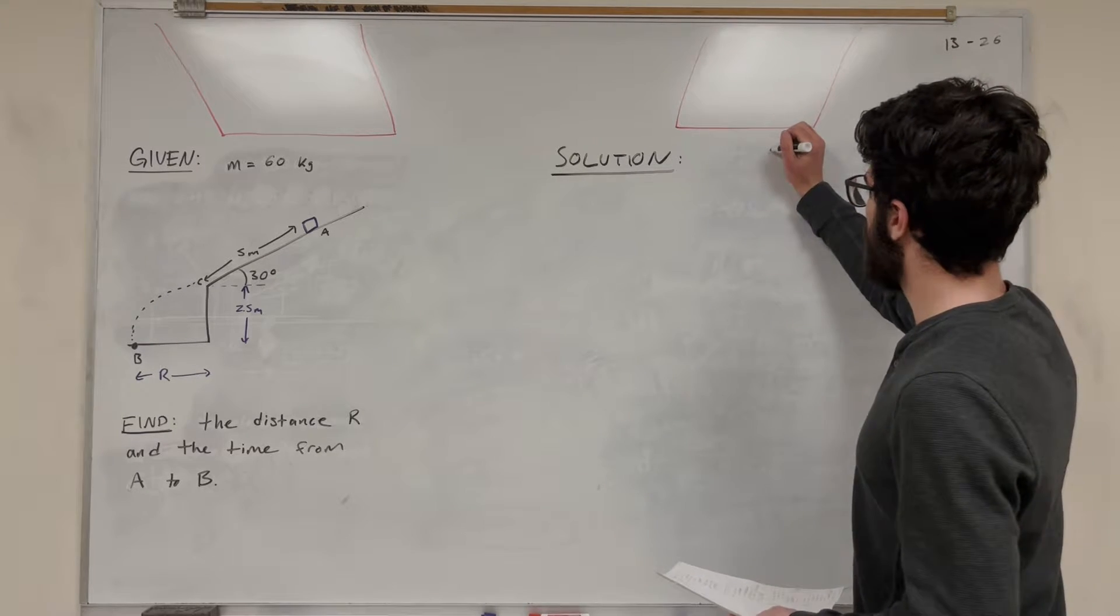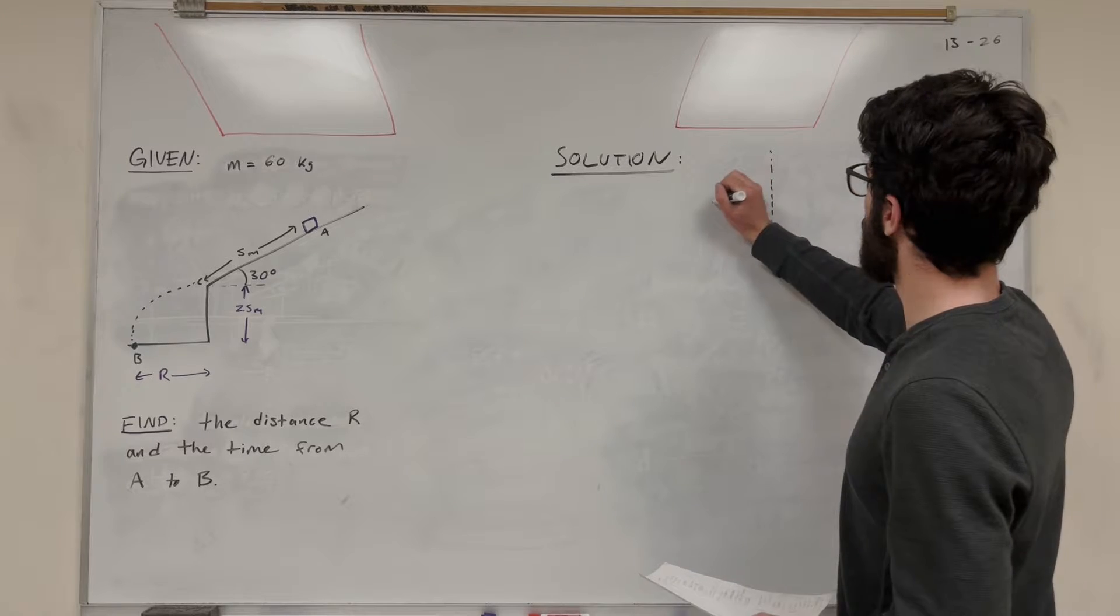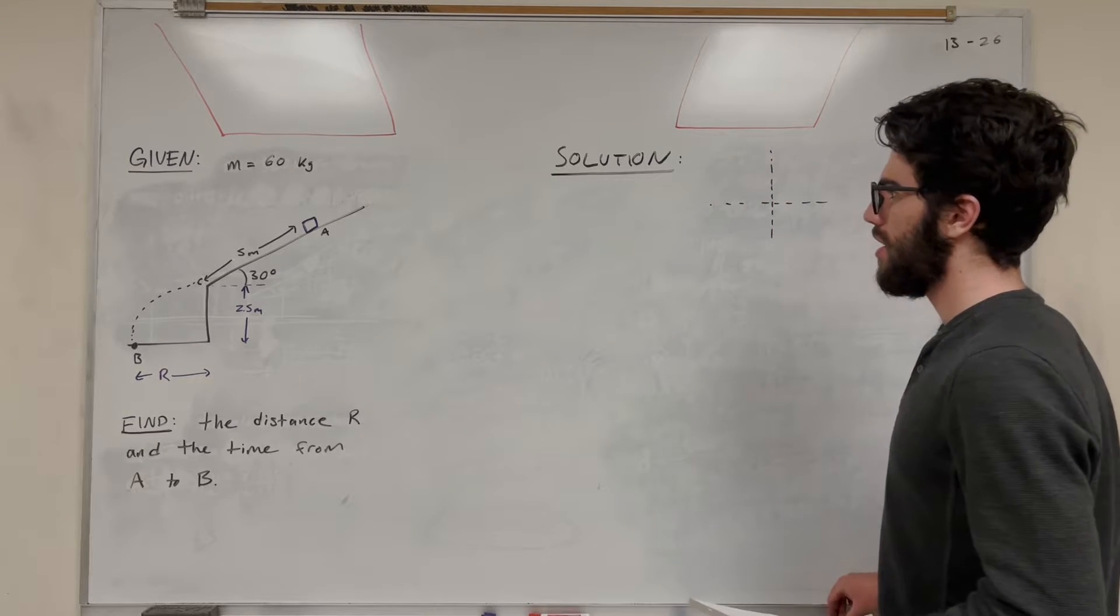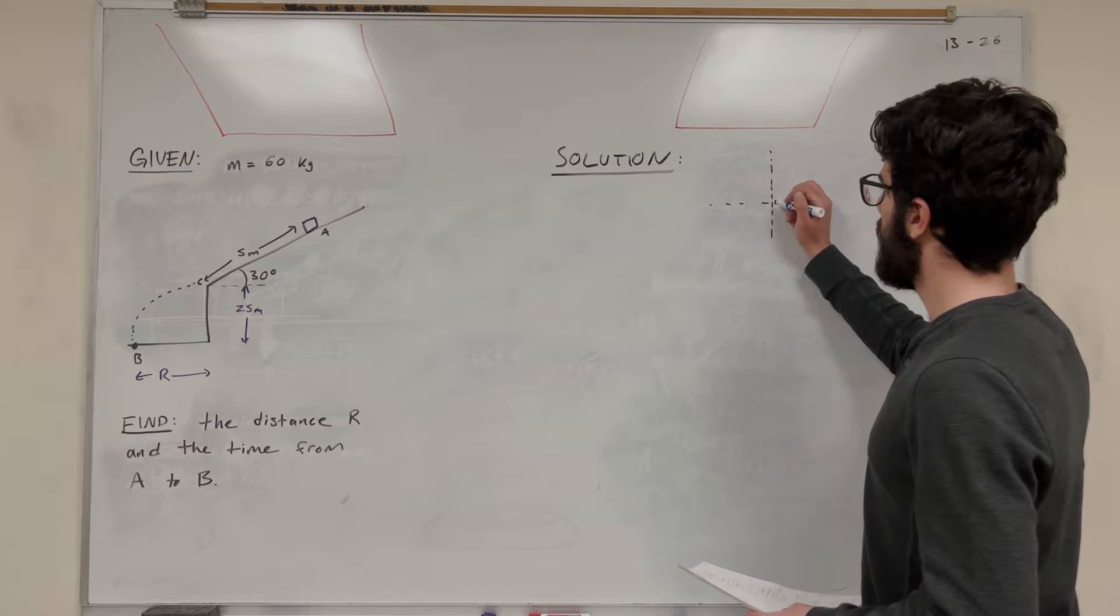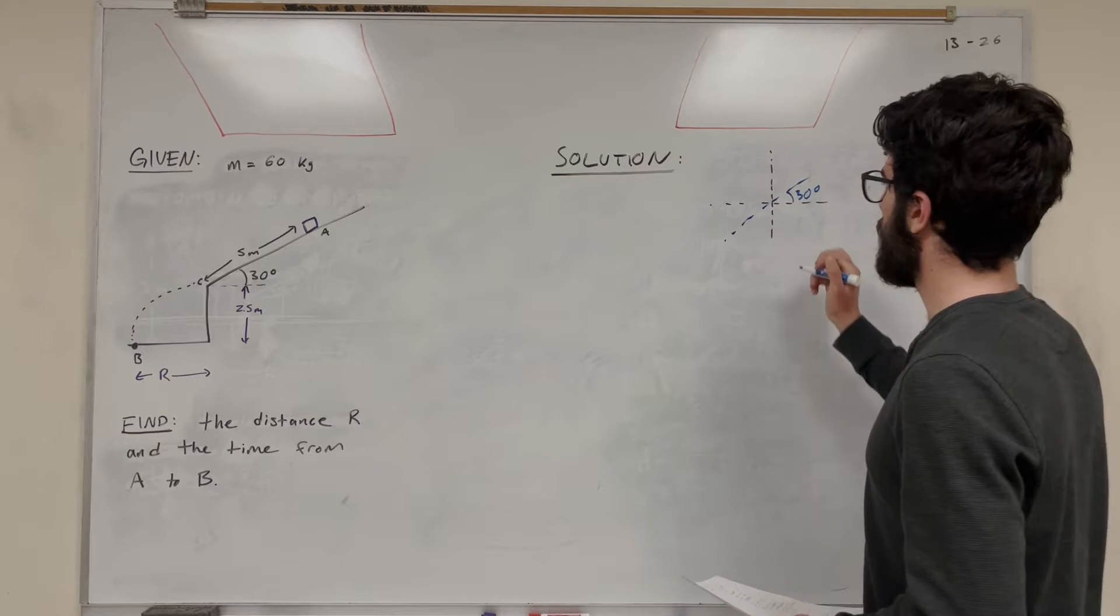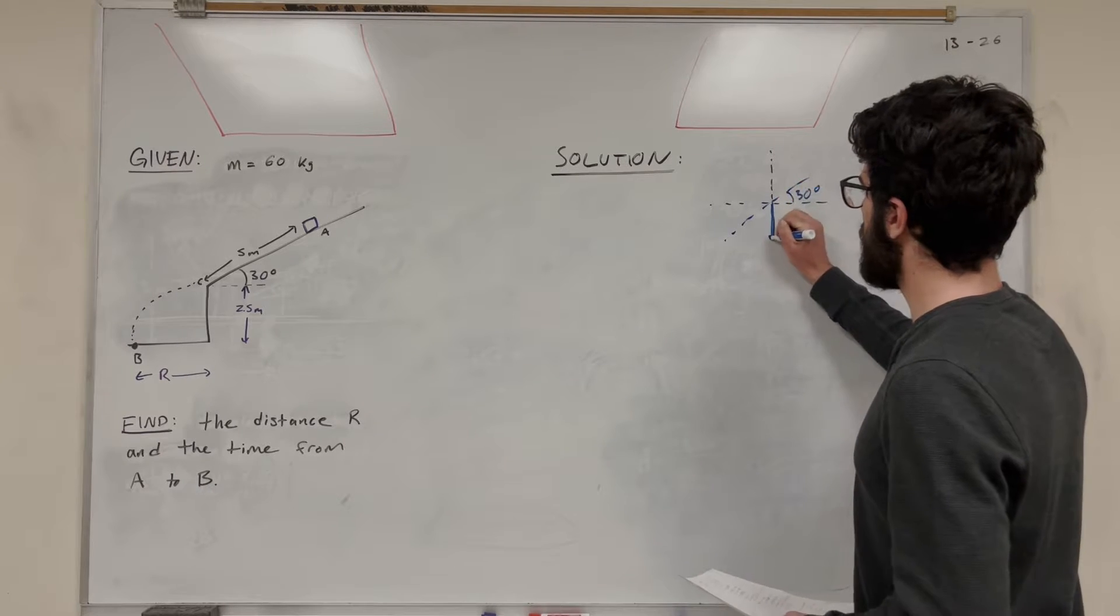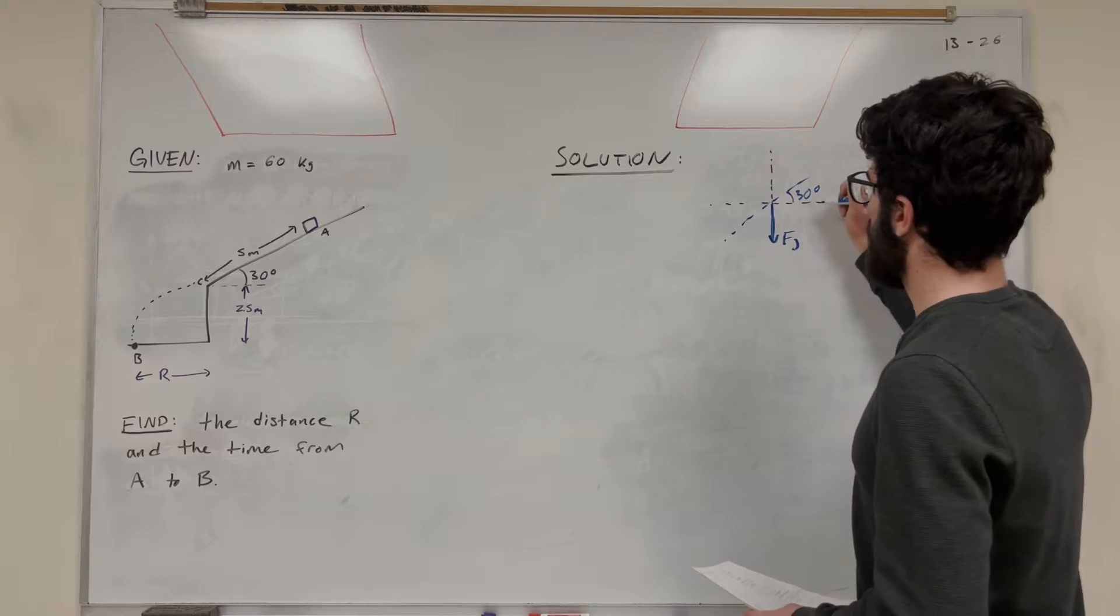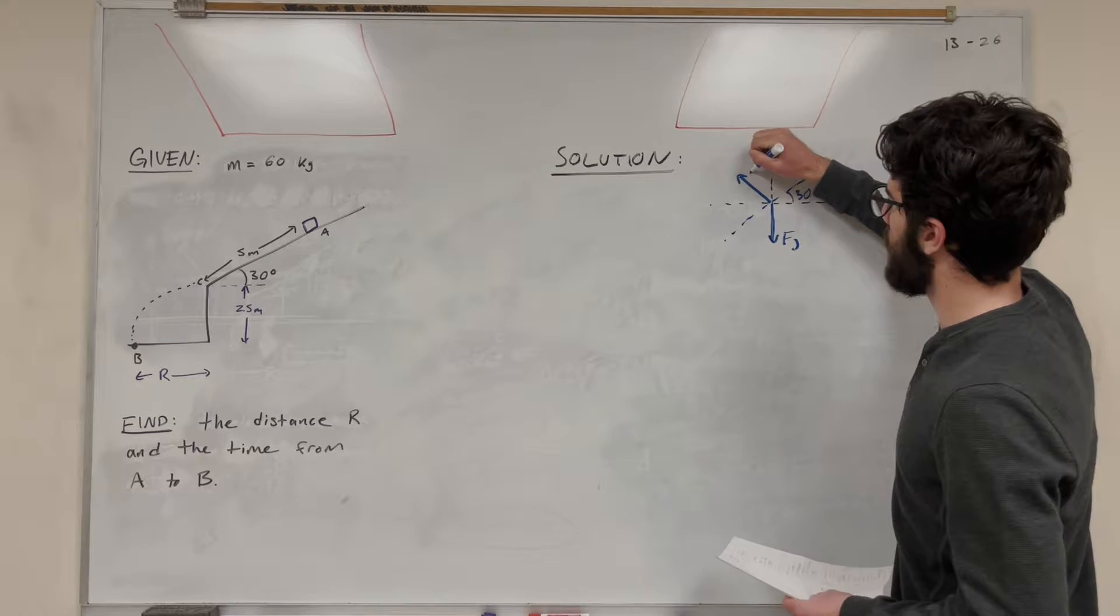Rest in peace, bad cap. Okay, so we have our ramp here. So what do we have? We know we have this 30 degree slope. Pushing straight down is that force of gravity, and then perpendicular to the slope is that normal force.